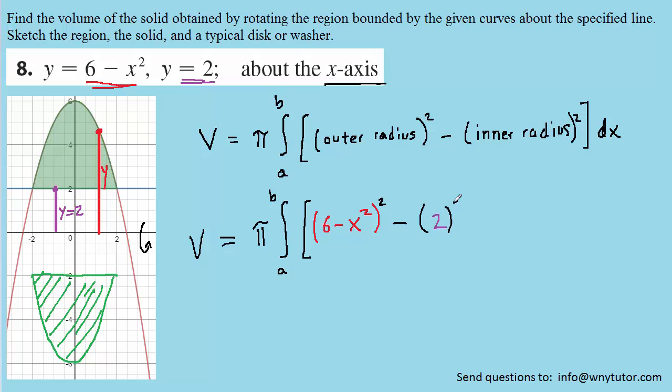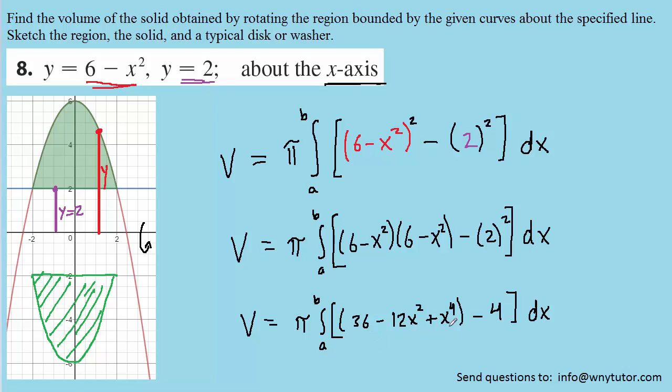Don't forget to square both of your radii, and then we'll put in dx. So this is the setup that we need in order to calculate the volume. Our next step would be to write six minus x squared twice since we're squaring it, and then we're going to foil it out. And so that would be the result. Notice that we also squared the two to make four.